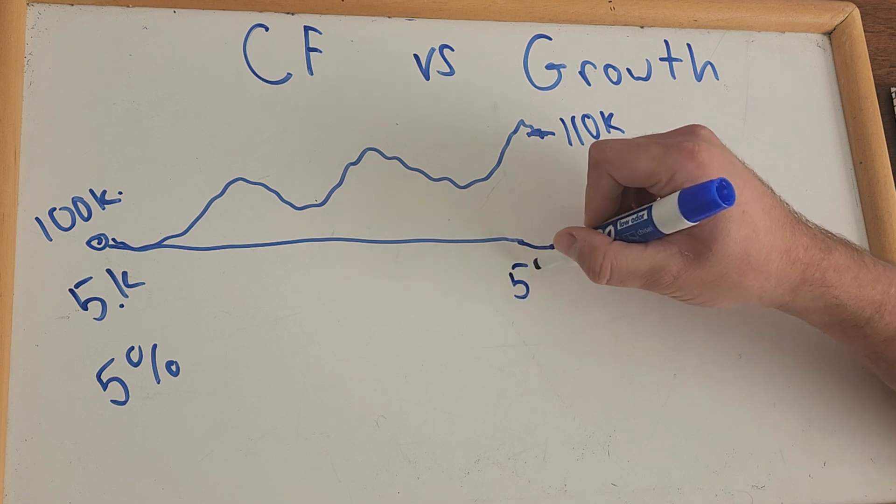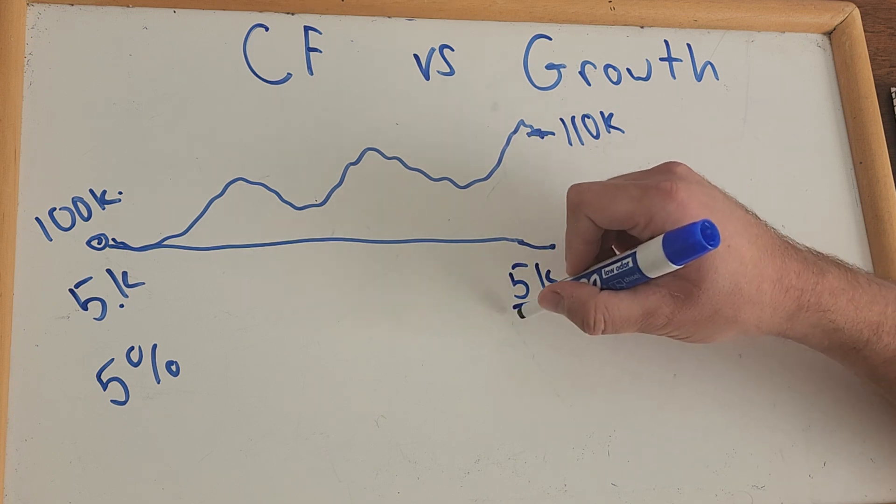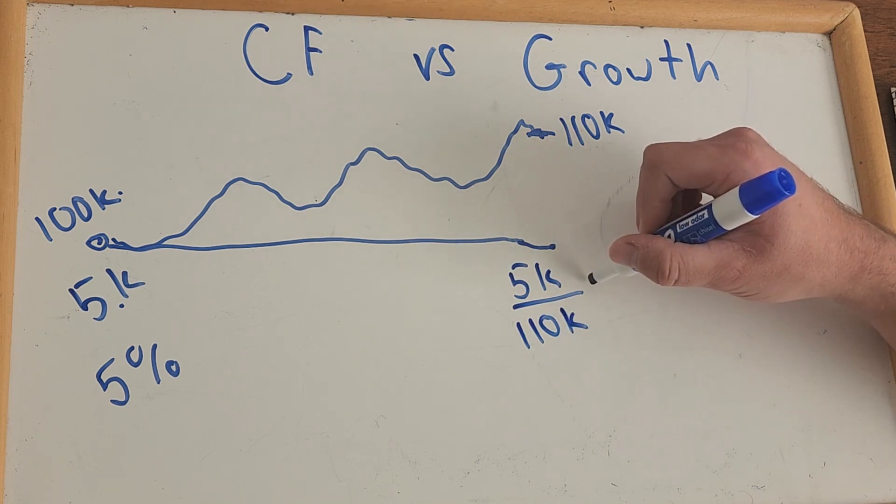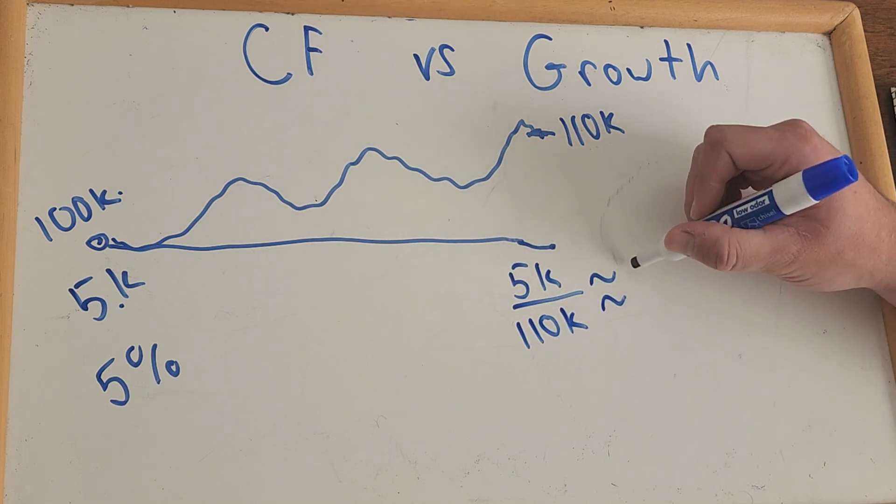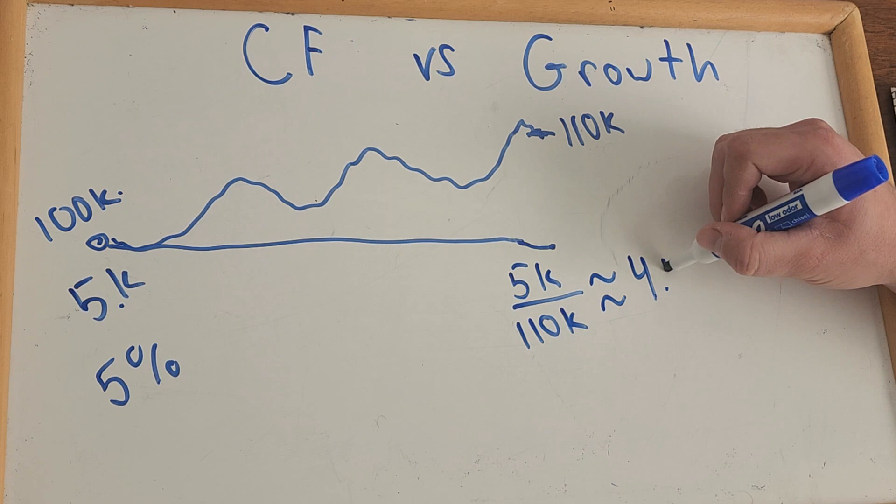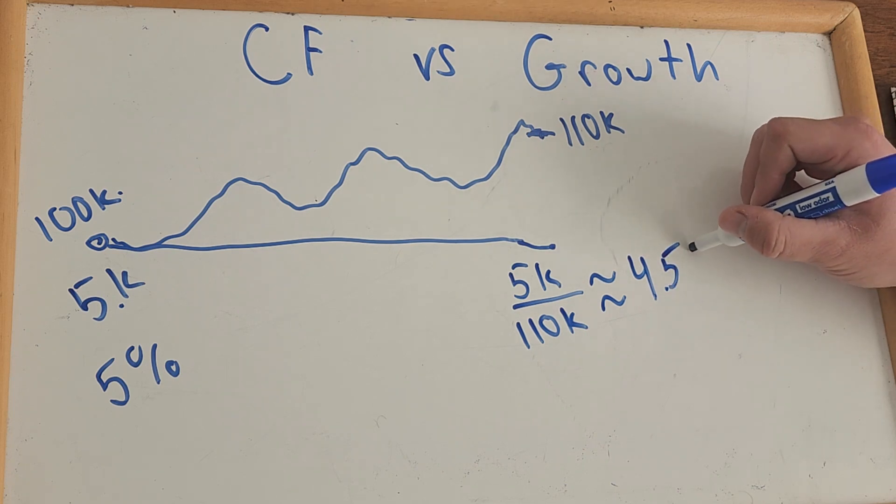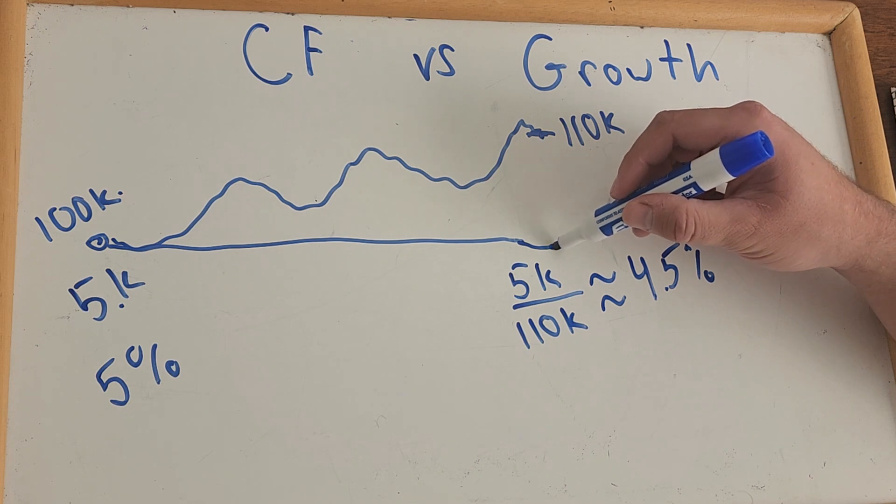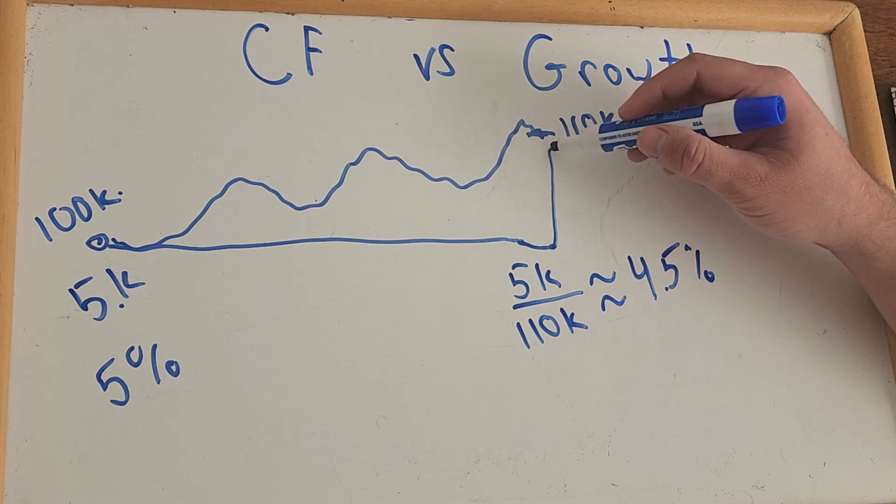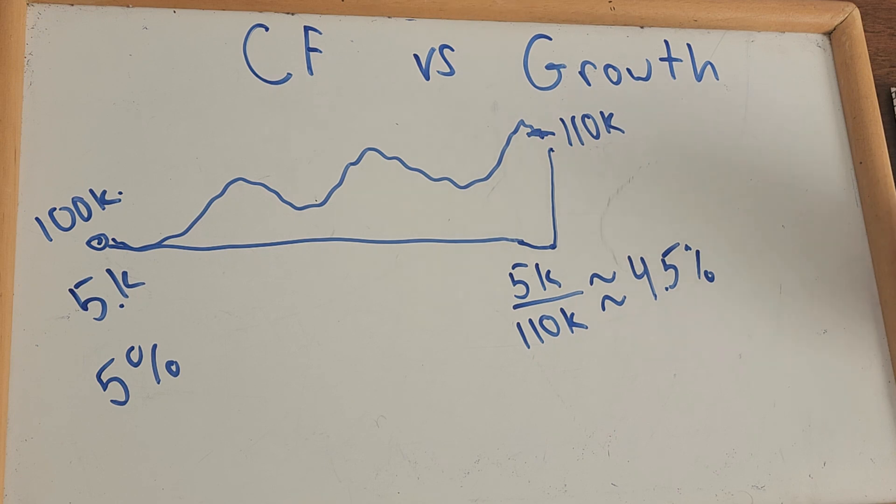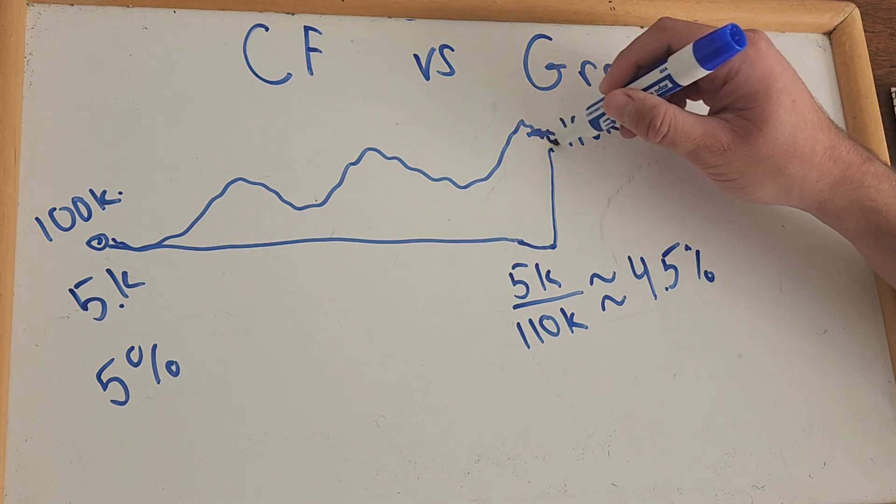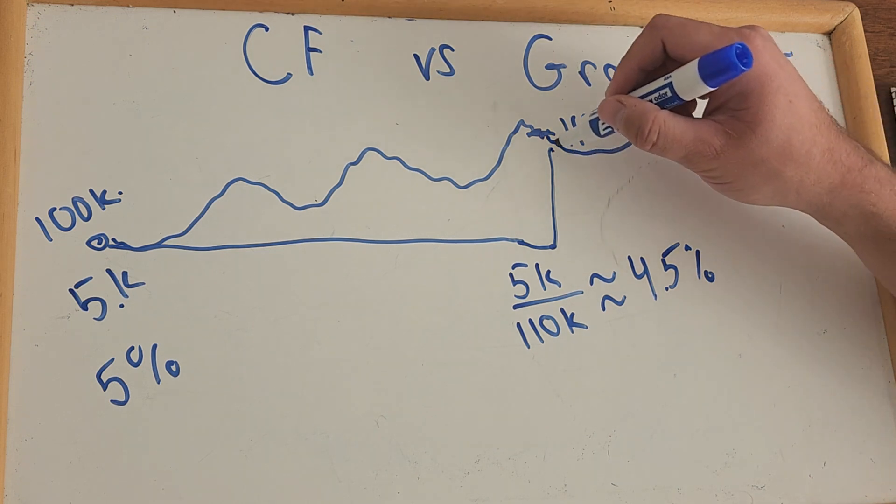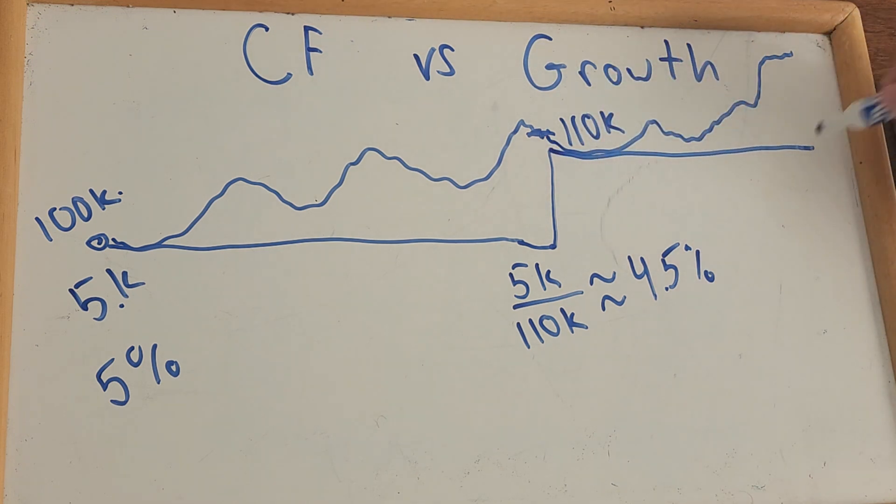Well, if we take 5K and divide it by 110, we will get somewhere very close to 4.5%. So what do we have to do? Well, we now have to increase the price of rent to match the growth. But the problem with that is then home prices are again going to do whatever they do, and they're going to go up in value, and rent's going to stay the same for a year.